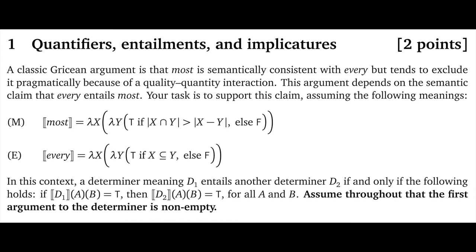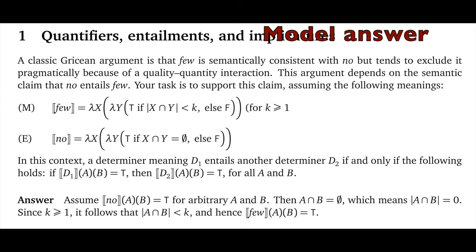What we're looking for here is a formal argument using abstract sets, so please don't use English sentences or English intuitions alone — those might be useful, but they just can't carry this argument. For a model answer, check out the argument I give on the model answers handout for 'few' and 'no'. The whole proof here is one sentence, and yours can probably be just as simple and succinct, though you'll need to restrict to the case where the first argument is non-empty, whereas the 'few' and 'no' case doesn't require that as I've defined them.